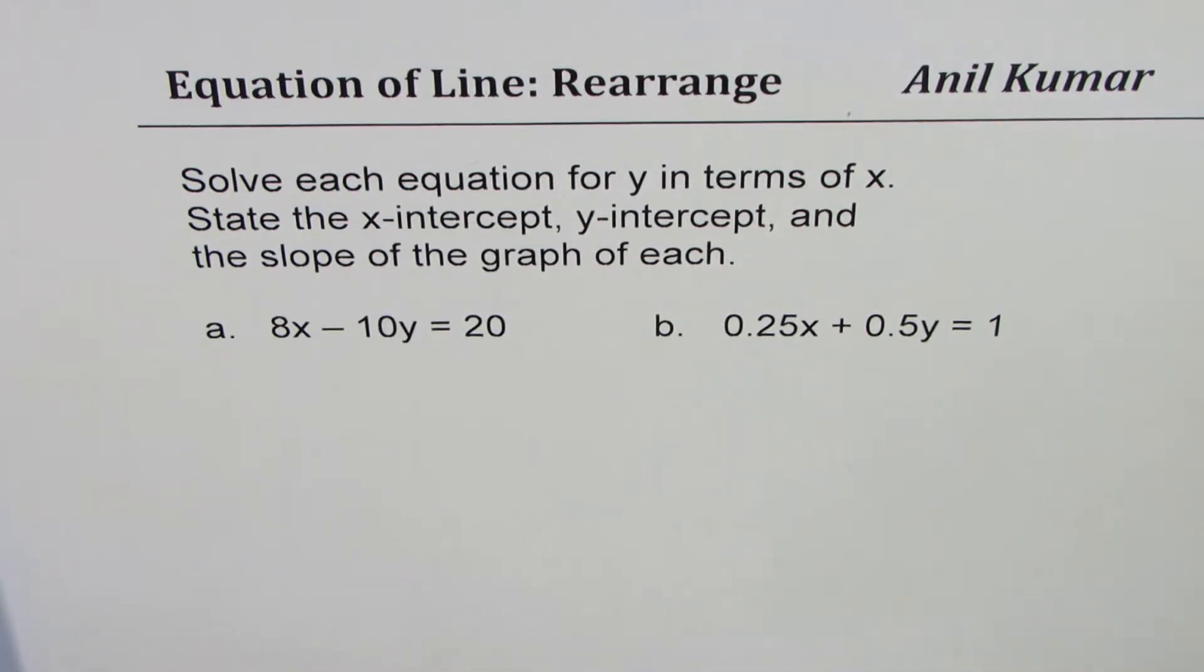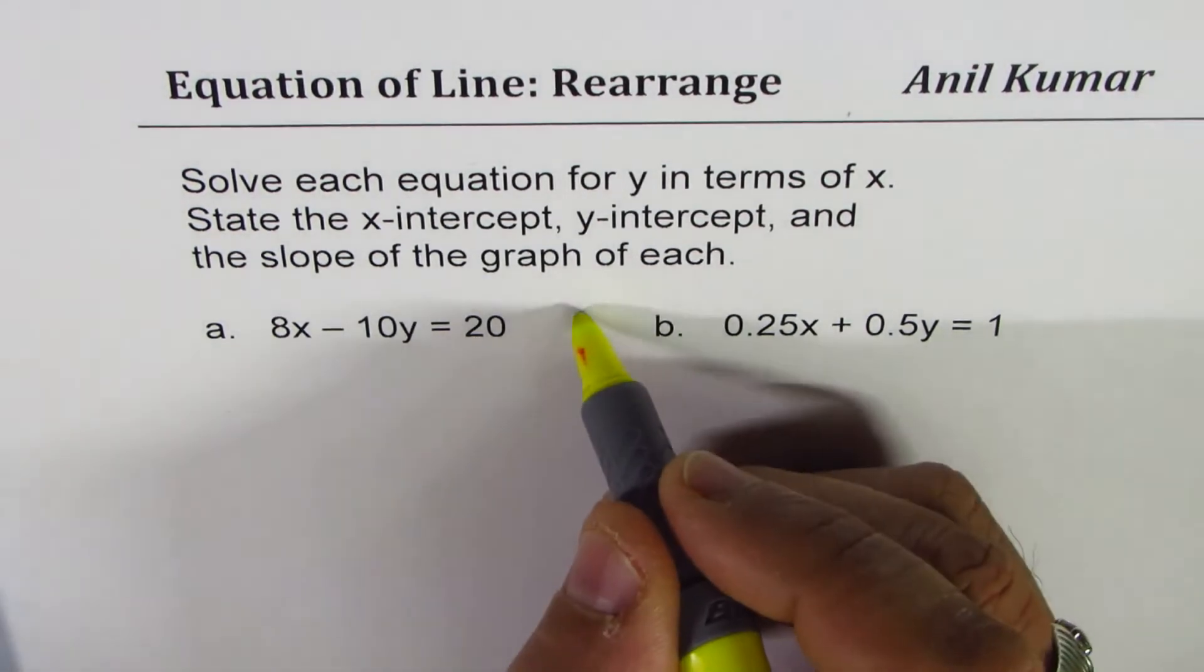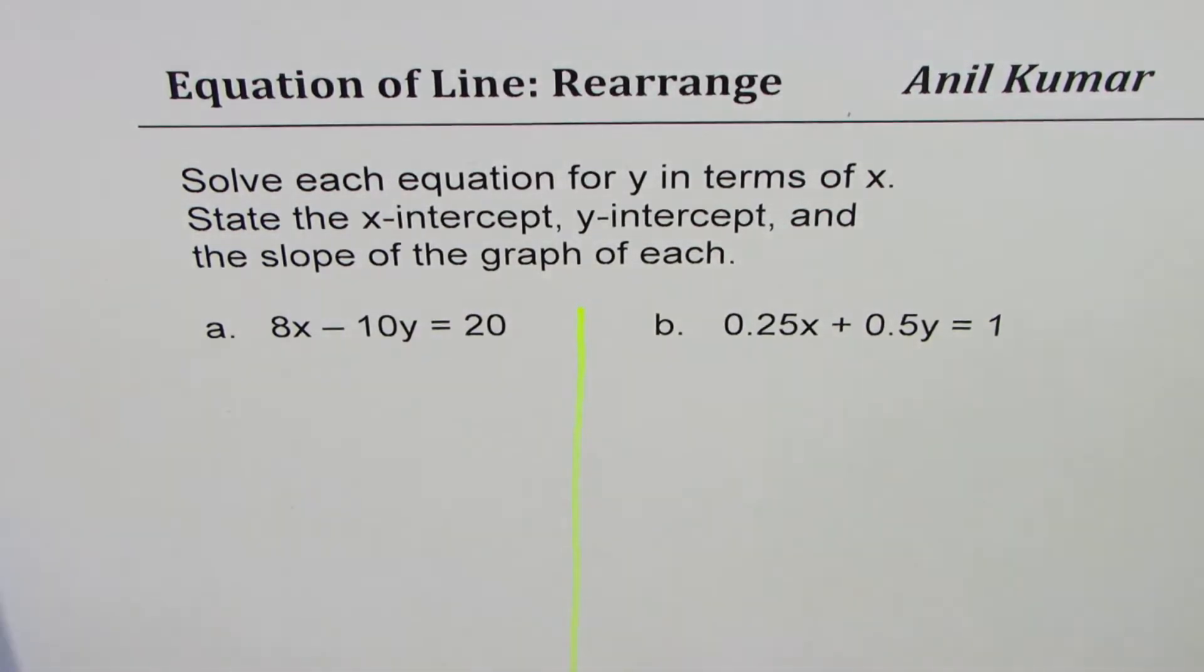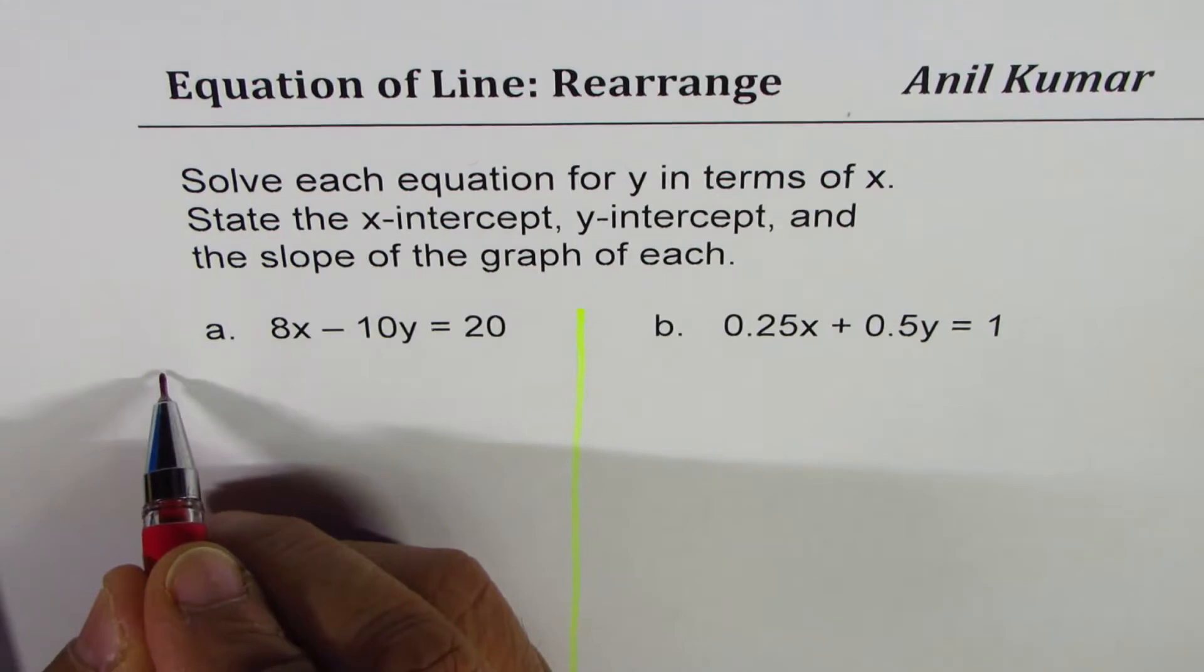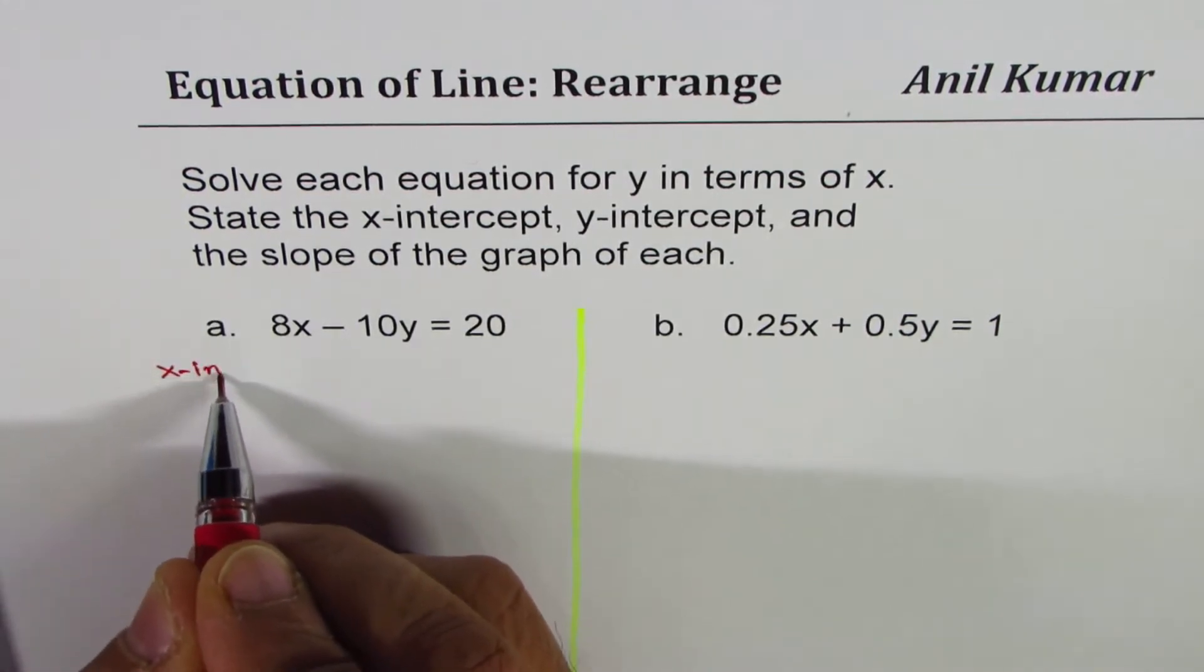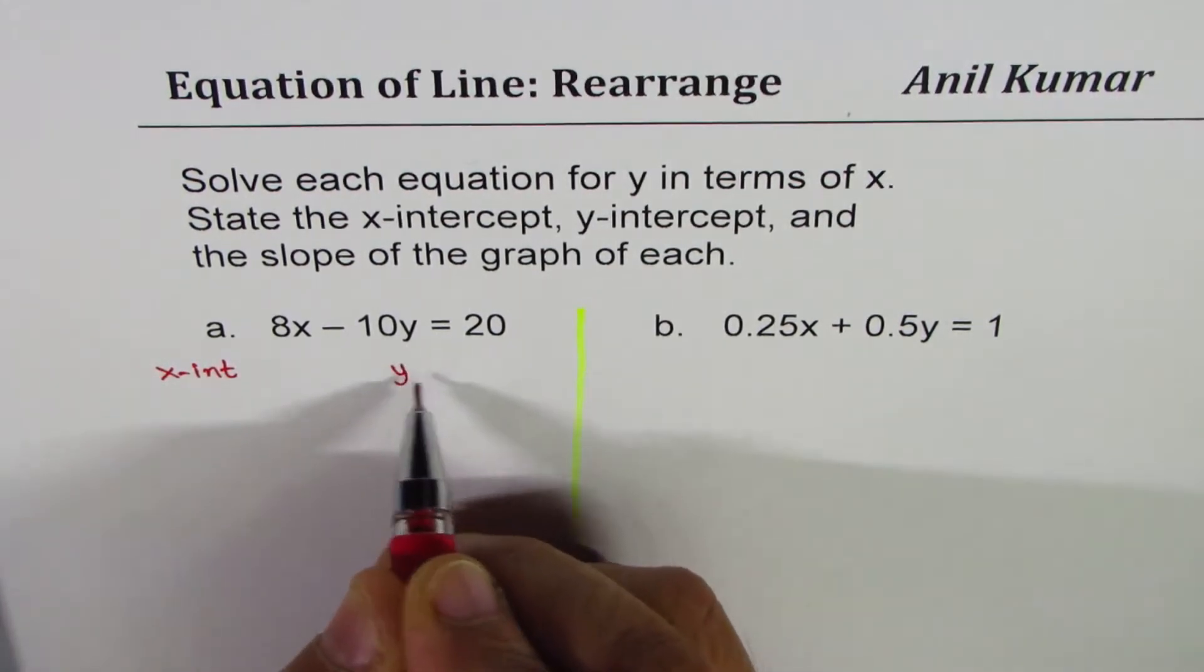So let's begin with the simpler one first, which has whole numbers in it, 8x minus 10y equals 20. We need to find x and y-intercepts, so let's write down x-intercept, I'm writing in short, and y-intercept.